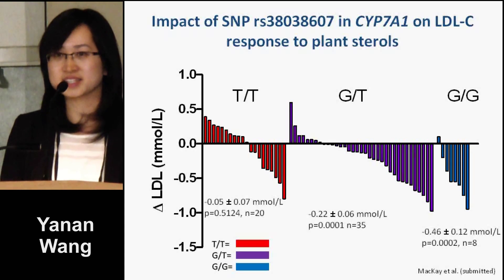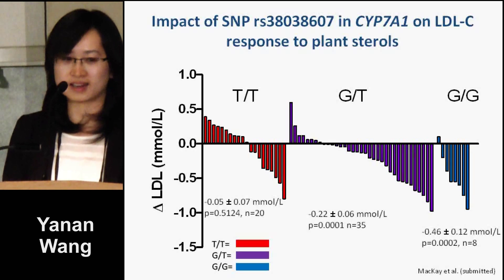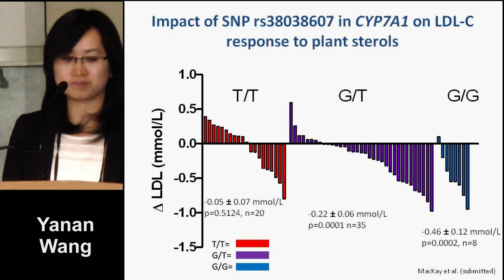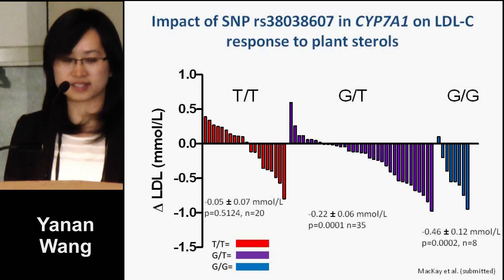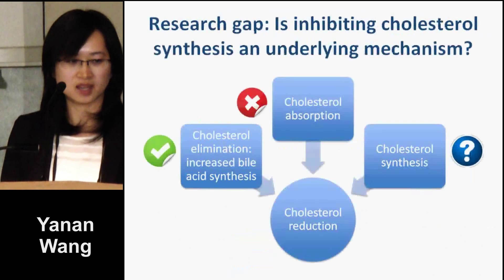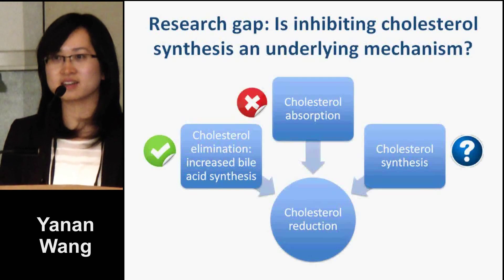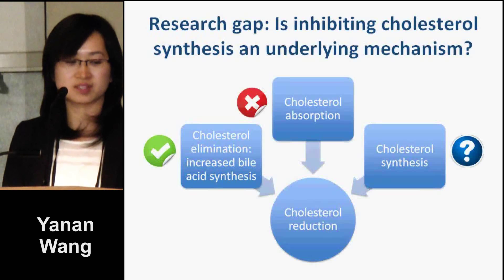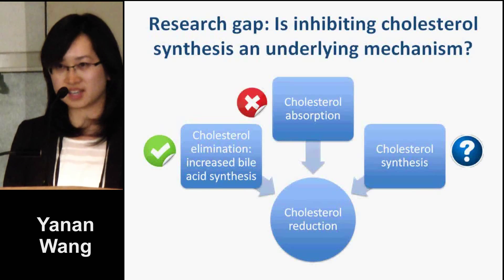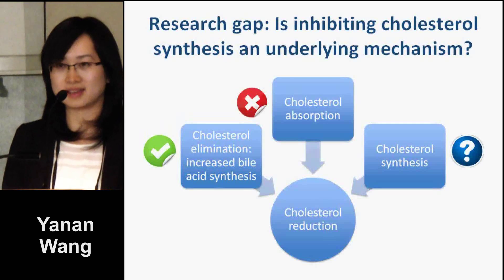All N-6 fatty acid levels measured in plasma phospholipids decreased in our study, in addition to alpha-linolenic acid, while all very long-chain fatty acid levels increased — so EPA, DPA, and DHA.